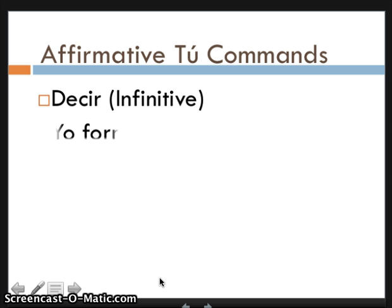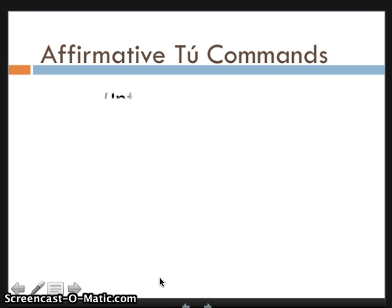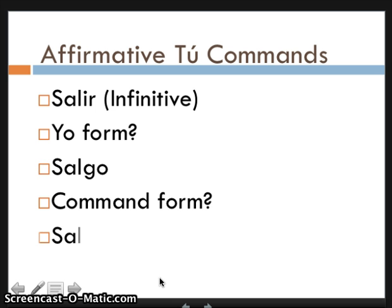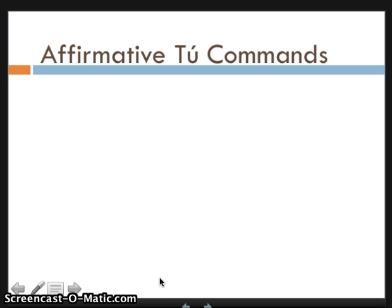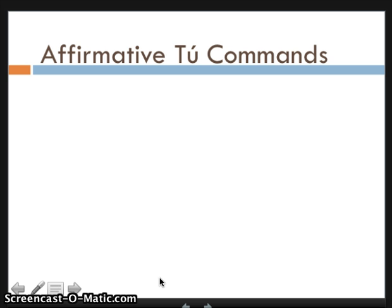'Decir': the yo form is 'digo,' and the command form when I drop the -go is 'di.' 'Salir': 'salgo,' and the command form would be 'sal.' 'Venir' becomes 'vengo,' and the command form would be 'ven.'